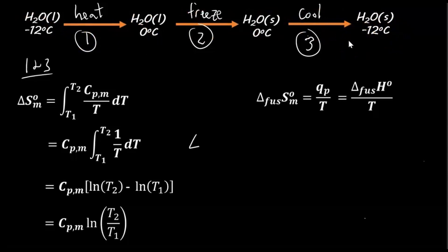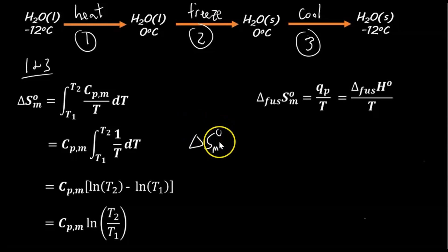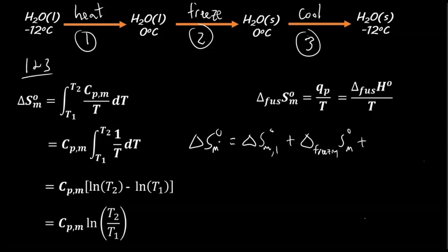The total change in molar entropy equals the change in molar entropy of step one, plus the change in molar entropy of freezing, plus the change in molar entropy of step three. Note: sometimes molar entropy is written without the 'm' subscript or with a bar on top — just check the units to confirm whether it's molar or not.